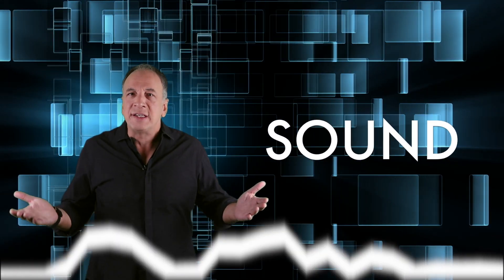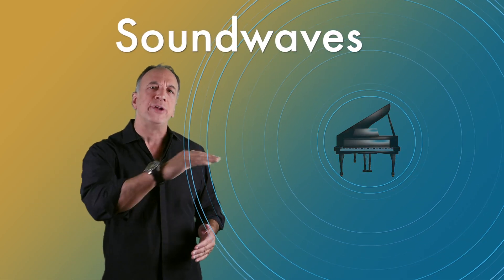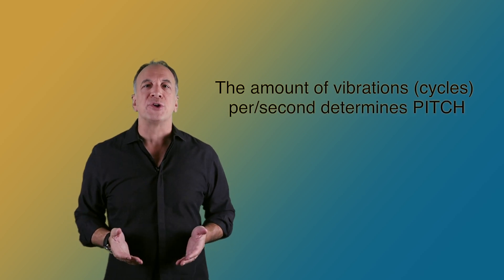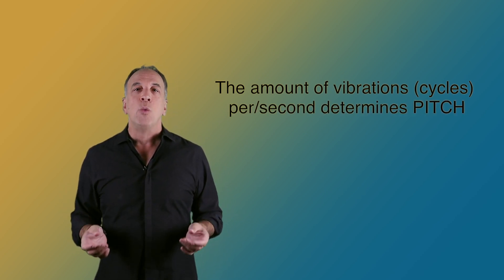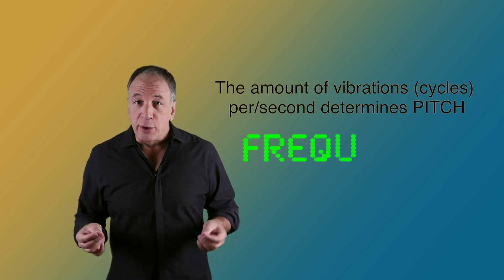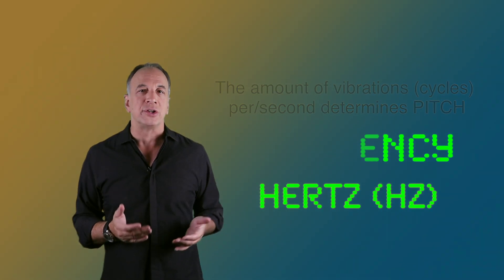Sound. What is it? Sound occurs when vibrations in an object cause pressure in the air to radiate outward and travel through the air as sound waves. The amount of vibrations per second the sound has, or cycles per second, will determine pitch — what we also refer to as frequency, measured in hertz.